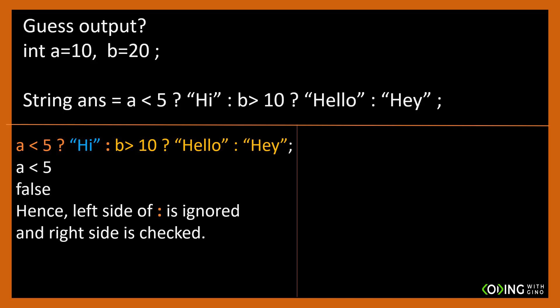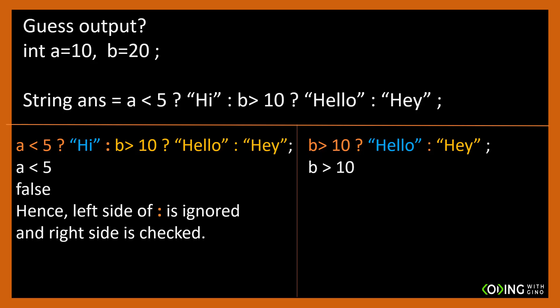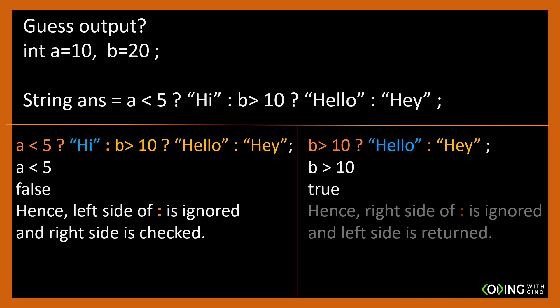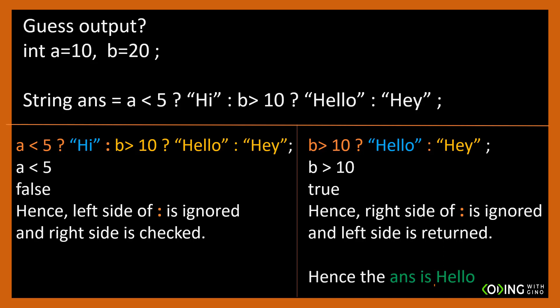What do we have on the right side of the colon? It is not a simple value we can store in variable answer. We have another condition specified using the ternary operator. It says, check if b greater than 10. If yes, store hello in answer, else store hey. In our case, b is 20, so b greater than 10 returns true. Hence, the left side of the colon is picked, and the value stored in answer is hello.